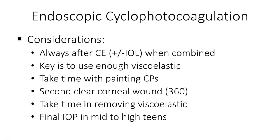Some important considerations with ECP: always perform ECP after cataract surgery, not before — it's quite difficult to do ECP in a phakic patient, and impossible to reach all of the epithelium on the ciliary processes. Use enough viscoelastic to elevate the iris off the ciliary processes so you have a good view and no risk of the iris falling in front of the probe. Take your time painting the ciliary processes. Create a second clear corneal incision supranasally to treat 360 degrees. Take your time removing the viscoelastic to avoid postoperative spikes. The final IOP is typically in the mid to high teens, reached two to eight weeks after treatment.